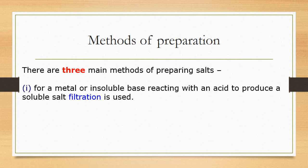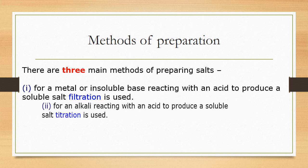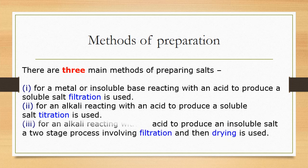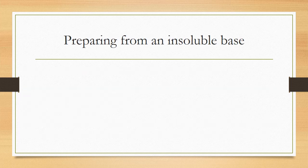There are three main methods. For a metal or insoluble base like a carbonate reacting with an acid to produce a soluble salt, you use filtration and evaporation. For an alkali reacting with an acid to produce a soluble salt, titration is used. For an alkali reacting with an acid to produce an insoluble salt, there's a two-stage process involving filtration and then drying.